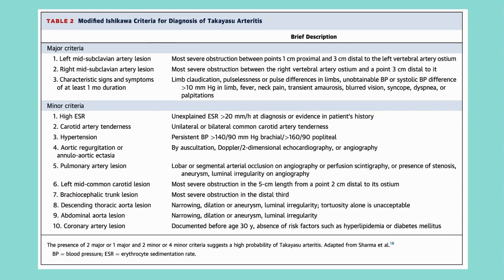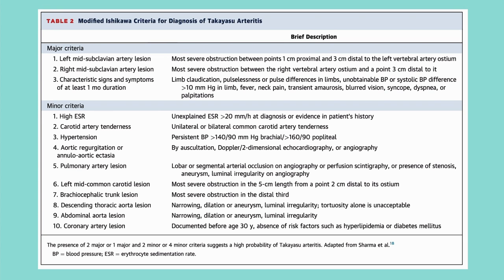You can also get narrowing of vessels coming off the abdominal aorta — here the renal vessels are stenosed and there's stenosis just before the bifurcation, which can lead to complications. Treatment for Takayasu's is prednisone and methotrexate — this is a newer recommendation; previously only prednisone was given. When giving methotrexate, supplement with folate or leucovorin. Second-line therapy is infliximab, with surgical options if medical therapy fails. Complications include hypertension from renal artery stenosis activating RAAS, peripheral vascular ischemia, TIA, stroke, and congestive heart failure from aortic regurgitation.